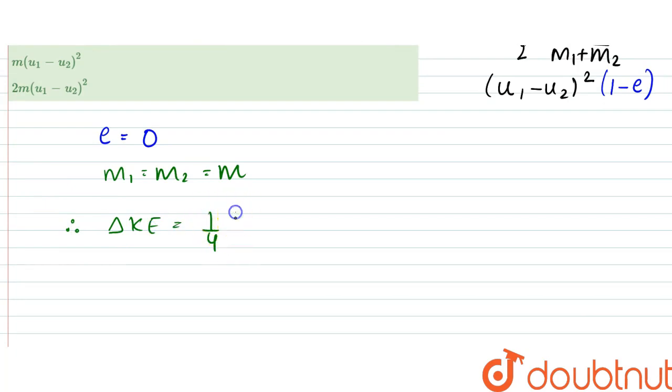4 m square by 2m into u1 minus u2 the whole square into 1 minus 0, so that is 1. So that can be written as, this would be cancelled out, this is only half. So this would